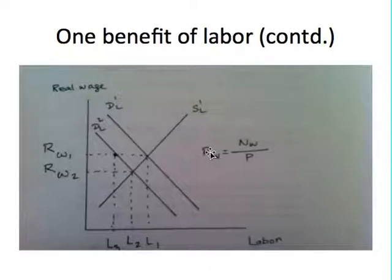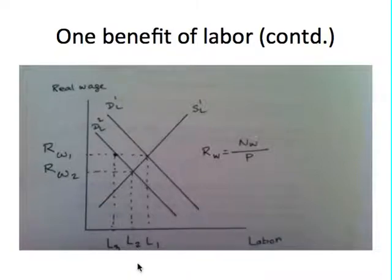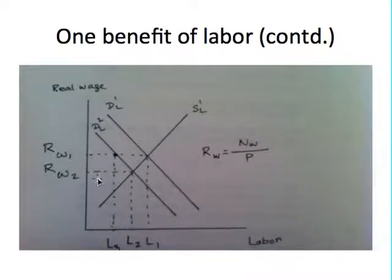Now suppose the demand for labor falls — the demand curve for labor shifts to the left. We have a new equilibrium point, which gives us the new equilibrium real wage Rw2 and the new level of labor L2. So L2 is the quantity of labor that firms are willing to hire at this moment — it's what the firms can afford to hire.